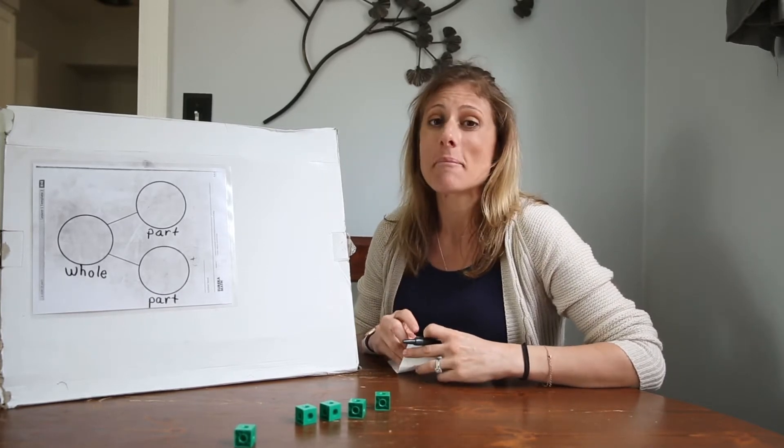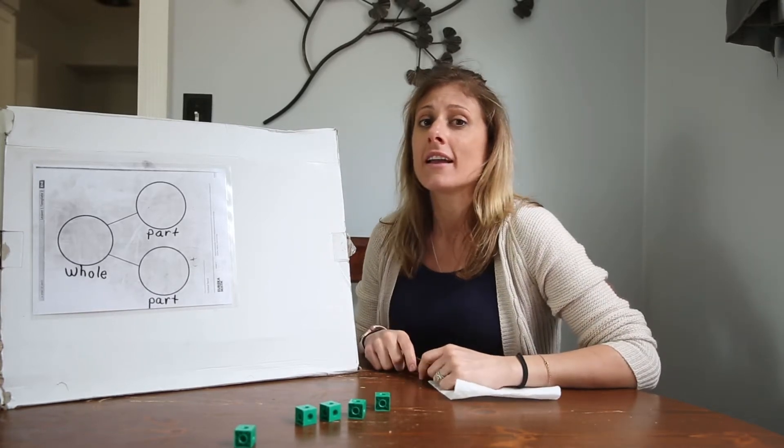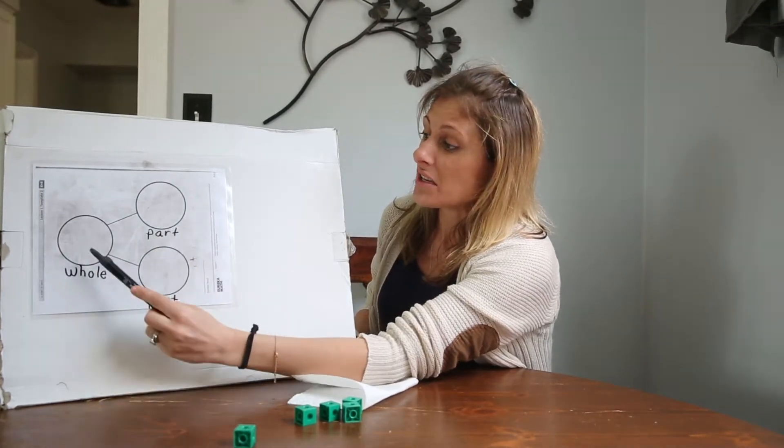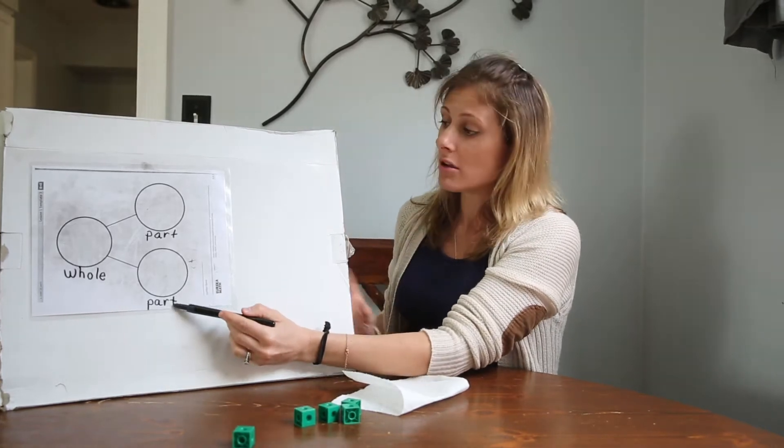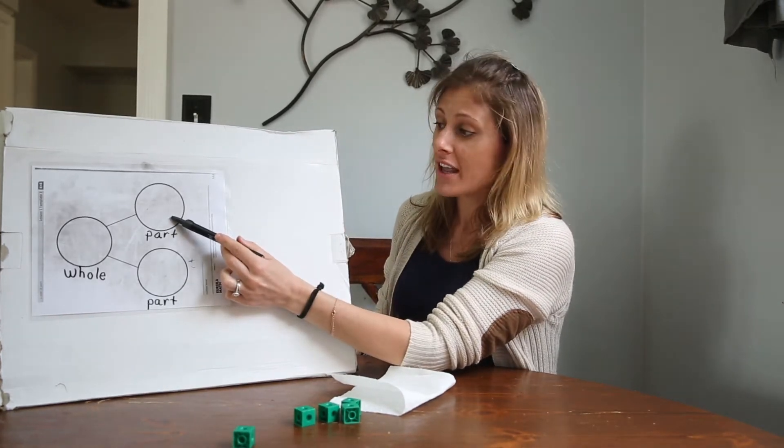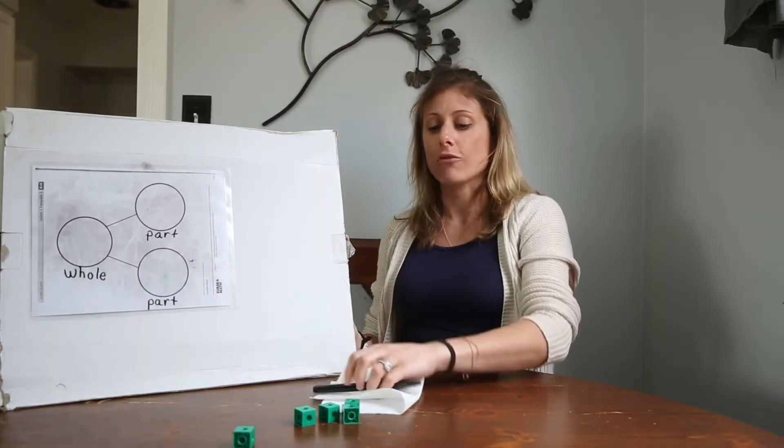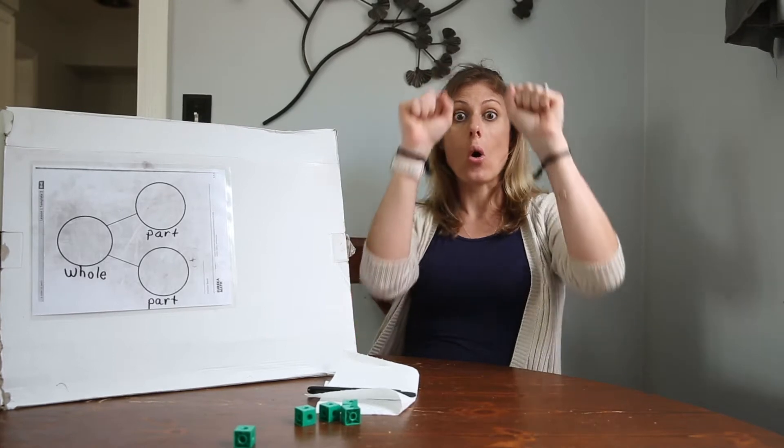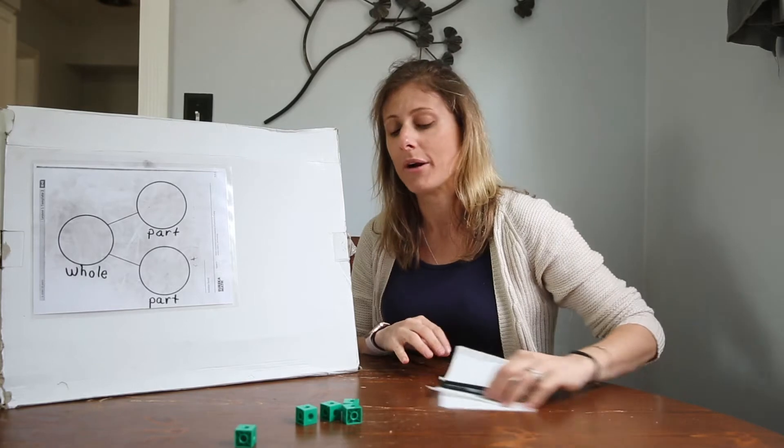We're gonna be doing some math work together and we're gonna be working with number bonds. Now a number bond is three circles and it's made of a part, another part, and together they make a whole. So if we go like this with our hands we say part, part, whole. The small parts make up the whole number.